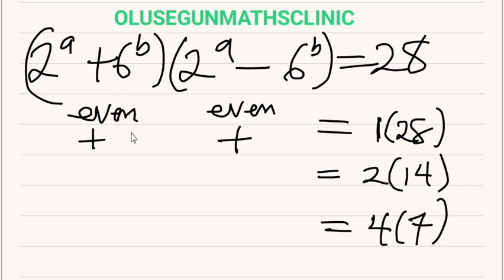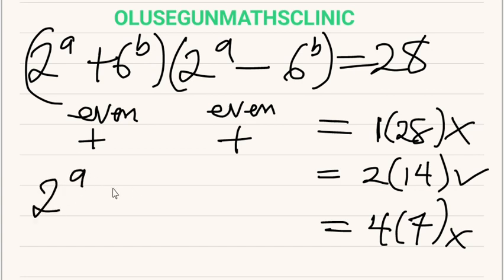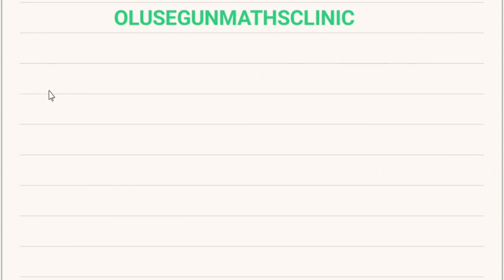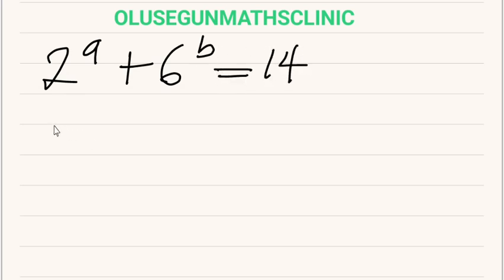Moreover, 2 raised to power A plus 6 raised to power B must be the greater value. Therefore, 2 raised to power A plus 6 raised to power B is equal to 14, and 2 raised to power A minus 6 raised to power B is equal to 2. Let's rewrite the system: equation one is 2 raised to power A plus 6 raised to power B equals 14, and equation two is 2 raised to power A minus 6 raised to power B equals 2.